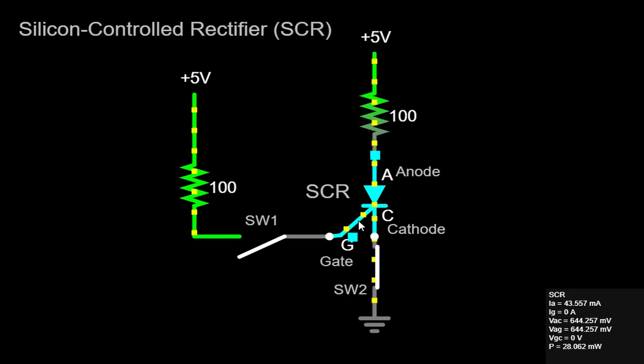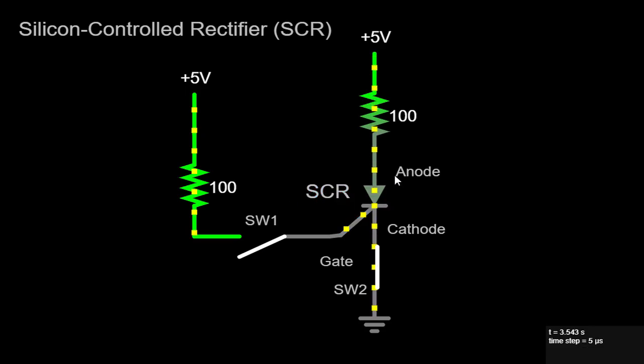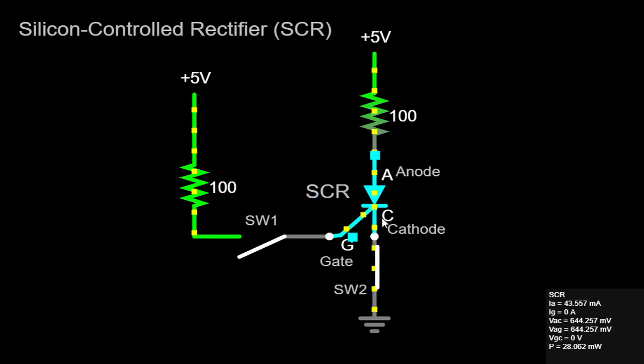Let's begin by examining the circuit simulation we have set up for demonstration purposes. We have an SCR with three terminals, the gate, the anode, and the cathode. The gate terminal is connected to a switch called SW1, and the anode terminal is linked to a plus 5-volt source through a 100-ohm resistor. Finally, the cathode terminal is connected to the ground via another switch named SW2.